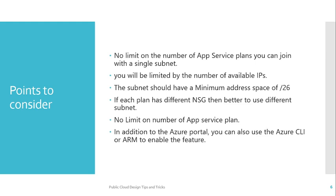The number of available IPs depends on the CIDR range you configure for the subnet. Third, the subnet should have a minimum address space of /26. This is a key requirement: when you want to share the same subnet with multiple app service plans, you must have a minimum subnet size of /26.